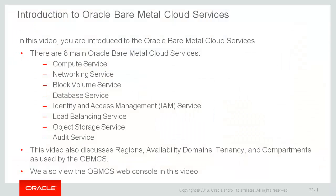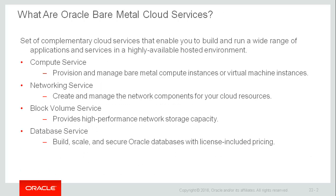In this video, you are introduced to the Oracle Bare Metal Cloud Services. There are eight main bare metal cloud services: Compute Service, Networking, Block Volume, Database Service, Identity and Access Management Service, Load Balancing, Object Storage Service, and Audit Service. This video also discusses regions, availability domains, tenancy, and compartments as used by the Bare Metal Cloud Services. And we'll take an introductory look at the Bare Metal Cloud Web Console.